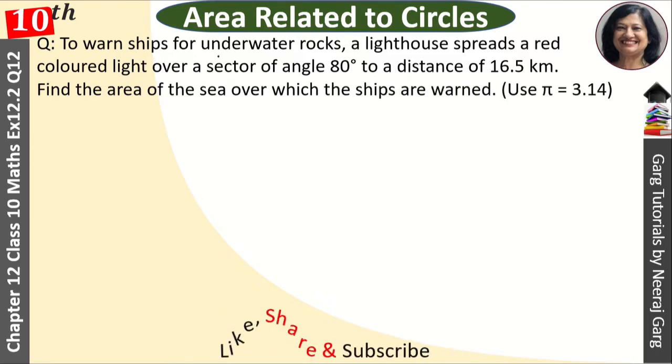To warn ships for underwater rocks, a lighthouse spreads a red colored light over a sector of angle 80 degree at a distance of 16.5 kilometer. Find the area of sea over which ships are warned. Use pi is equal to 3.14.